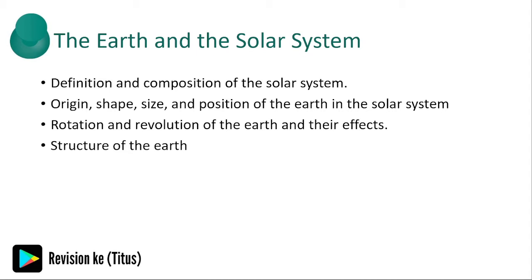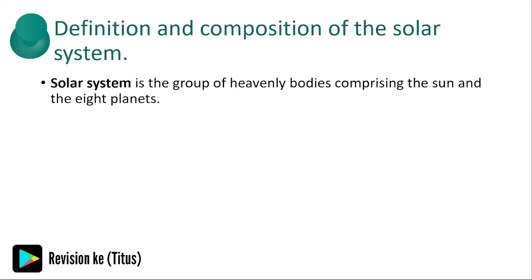So what is the solar system? These are the group of heavenly bodies comprising the sun and the eight planets.